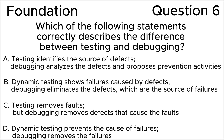ISTQB Foundation Level, question 6: Which of the following statements correctly describes the difference between testing and debugging? A) Testing identifies the source of defects; debugging analyzes the defects and proposes prevention activities. B) Dynamic testing shows failures caused by defects; debugging eliminates the defects which are the source of failures. C) Testing removes faults but debugging removes defects that cause the fault. D) Dynamic testing prevents the cause of failures; debugging removes the failures.